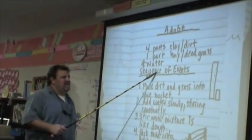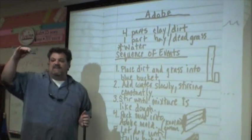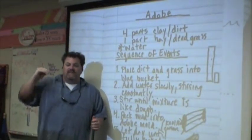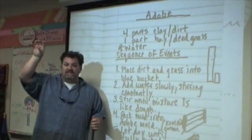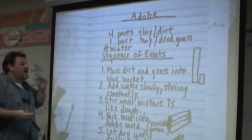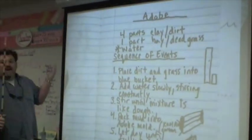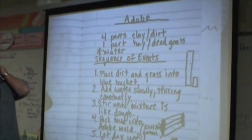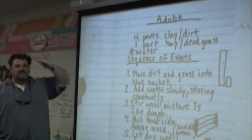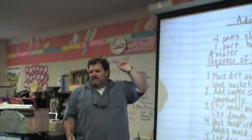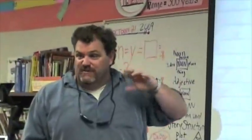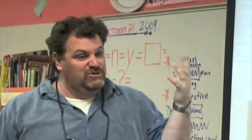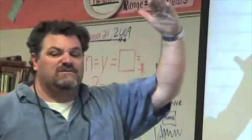Can somebody explain what sequence of events means — what we do to make an Adobe Brick? In narrative writing, we say the sequence of what's going to happen in the story. That also happens when you watch a TV show — the story has a sequence of events. Usually everything's great, then there's a problem, and then by the end there's a solution.